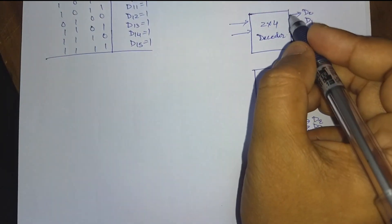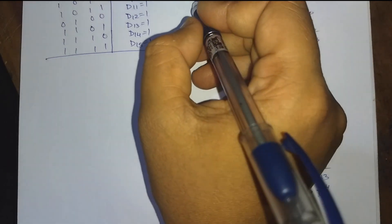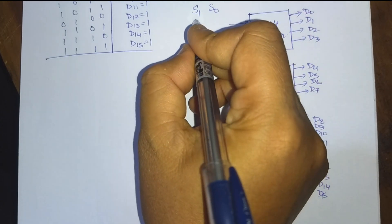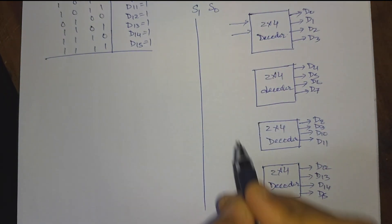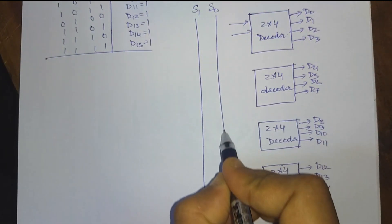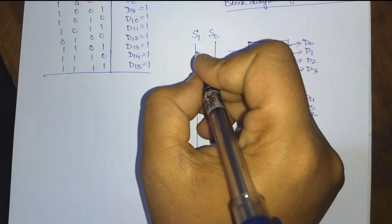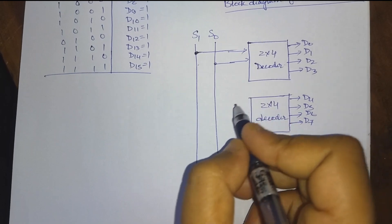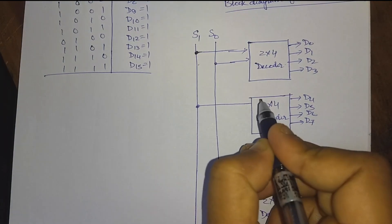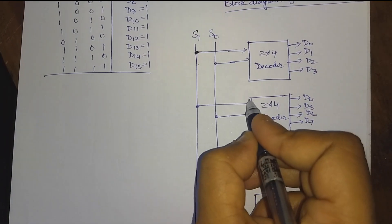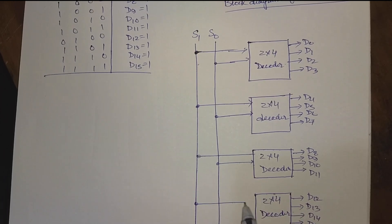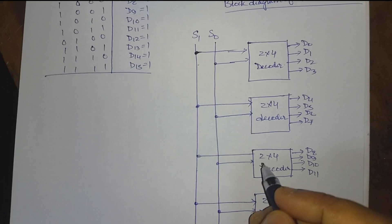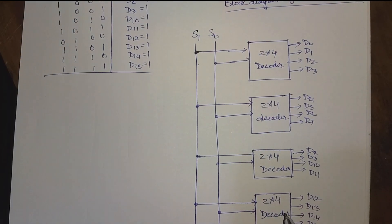So for each 2x4 decoder, we will have 2 input lines, that means S1 and S0. Let us draw these 2 lines here. These are the S1 and S0 lines, and here we connect like this. For all the 2x4 decoders we have to connect like this. S1 and S0 are applied to all these 2x4 decoders.